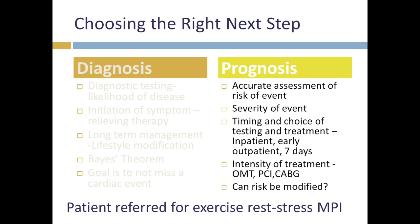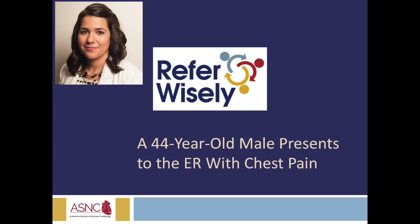Because of that high pre-test probability, it's more appropriate to order an exercise stress MPI over a routine exercise stress echo. Consider the pre-test probability of coronary artery disease before ordering the test. And as a reminder, if a patient presents with typical symptoms but has a negative EKG and negative enzymes, you're only ruling out myocardial infarction. These symptoms could still represent unstable angina, and you want to make sure you're working that up appropriately.